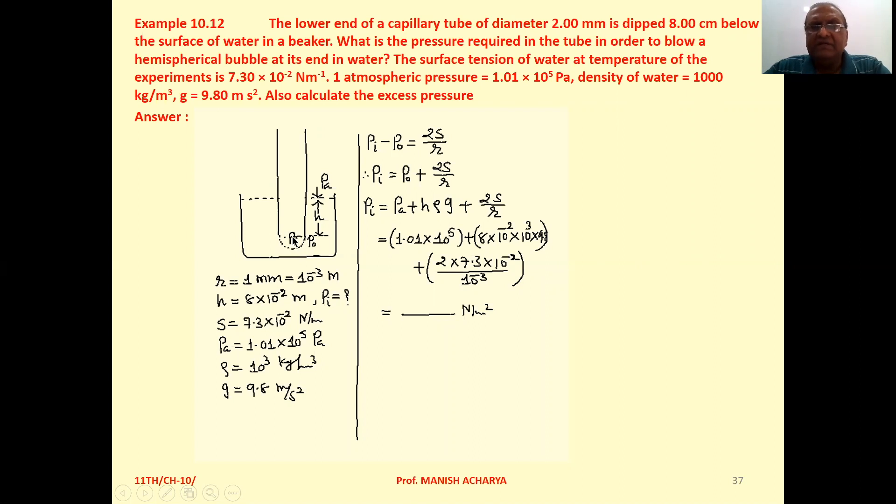The radius of the bubble will be exactly equal to the radius of the tube. So that is 1 millimeter, because diameter is given as 2 millimeter. That's 10⁻³ meter.